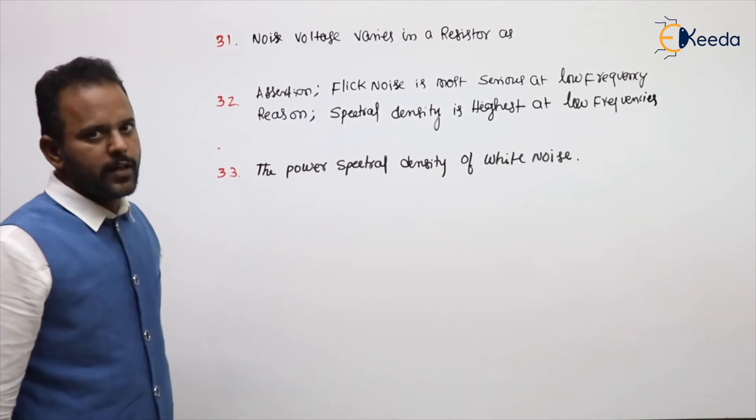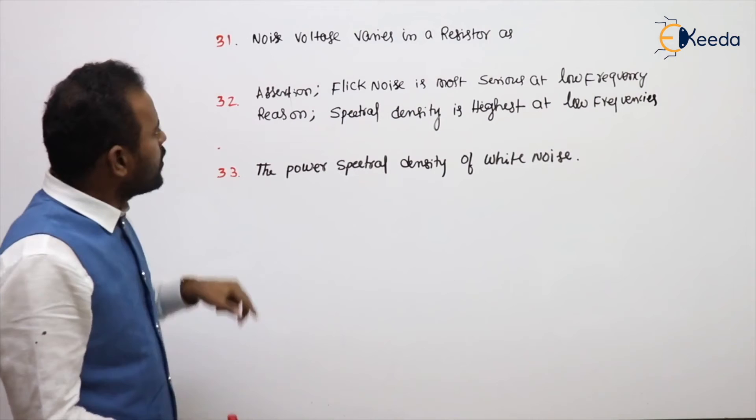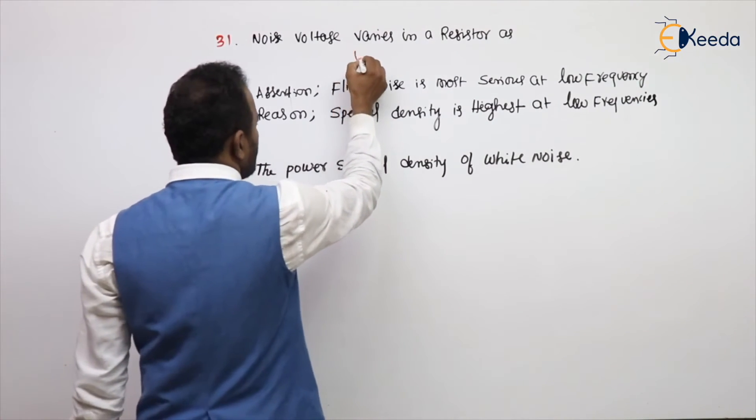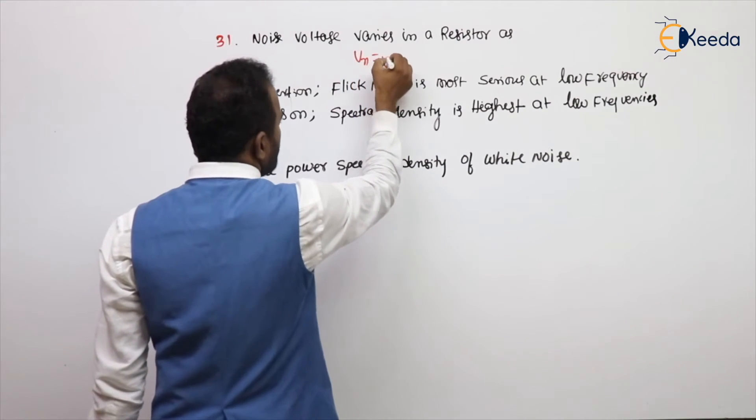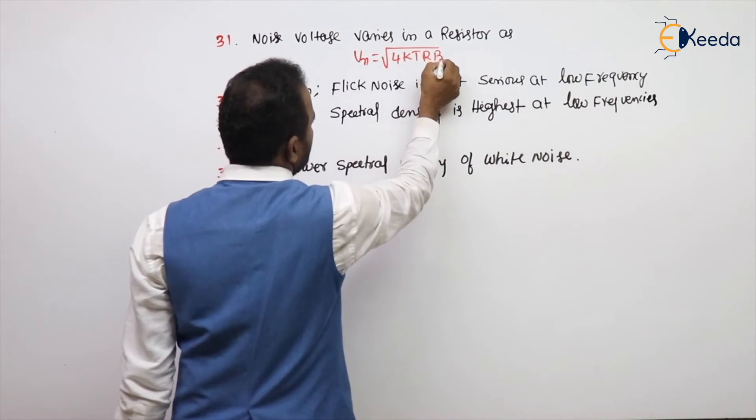See, three simple problems on the noise calculations. Noise voltage varies in a resistor as - what is the noise voltage? Just now we derived the formula, VN is root of 4 KT R into B.